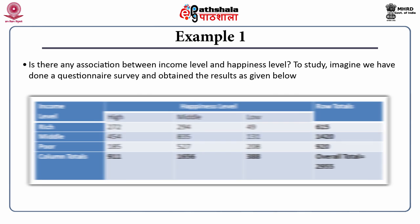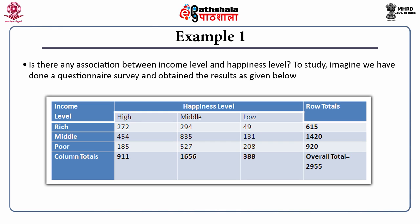Here is the first example: is there any association between income level and happiness level? We conducted a questionnaire survey and obtained results in a table. Income has three categorical levels — rich, middle, and poor — while happiness level also has three categorical levels — high, middle, and low. These are the observed counts in each cell.